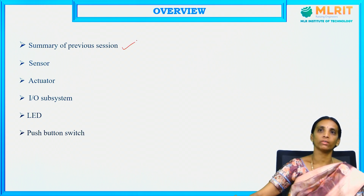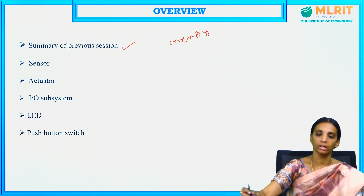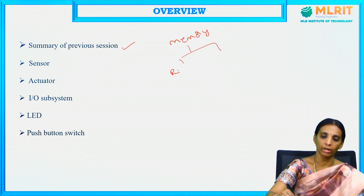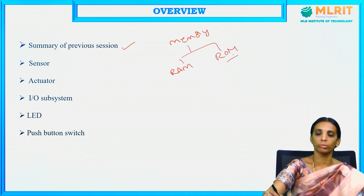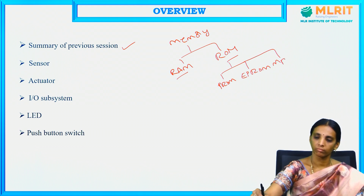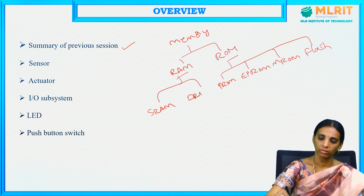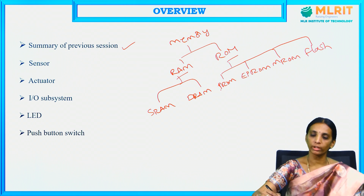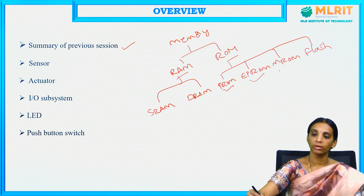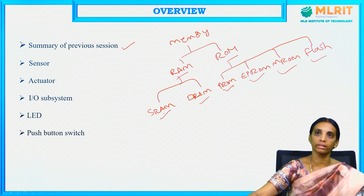In the previous session, we discussed about memory — how memory is organized for embedded system design and different types of memory: RAM and ROM. What is read-only memory, what is random access memory, and the types of ROM and RAM — SRAM and DRAM — including programmable read-only memory, erasable and programmable read-only memory, maskable read-only memory, flash memory, dynamic RAM, and static RAM.